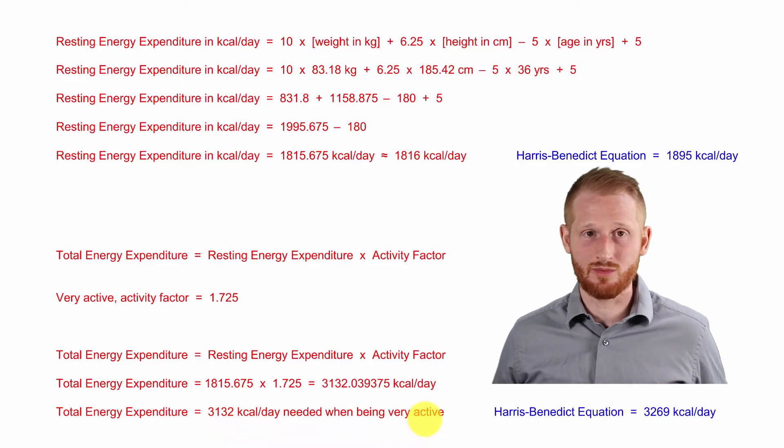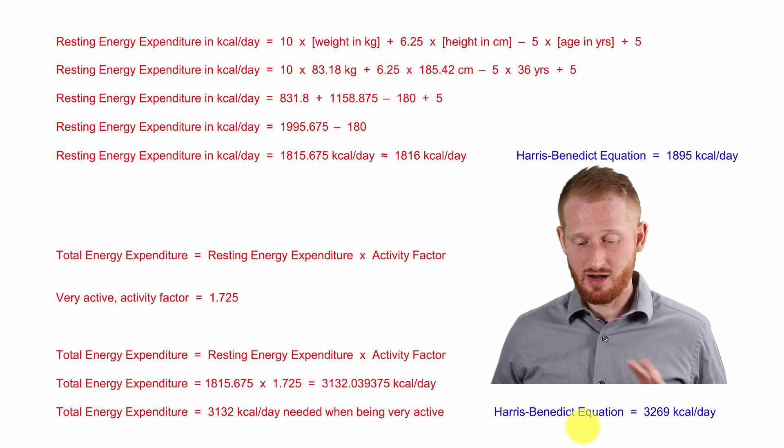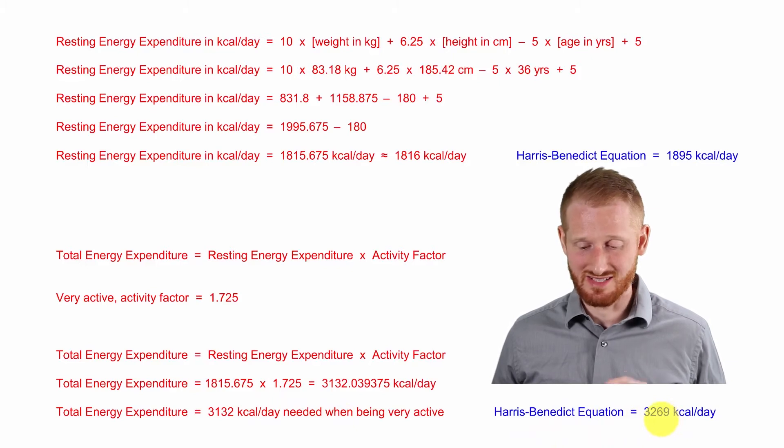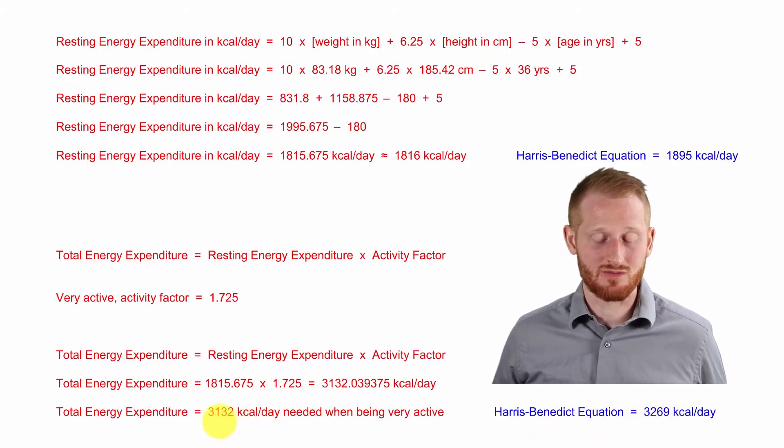For our example person here, Pete's. Comparing the Harris-Benedict equation to the Mifflin-St. Jory equation, Harris-Benedict equation was 3,269 kcal per day. Again, the Mifflin-St. Jory equation was 3,132 kcal per day.